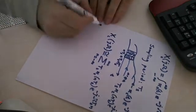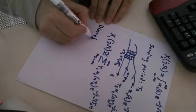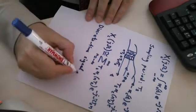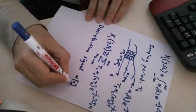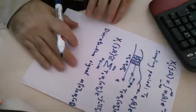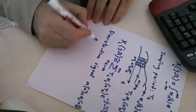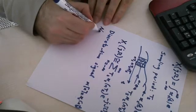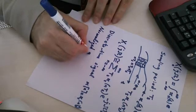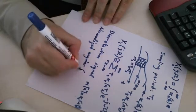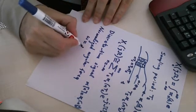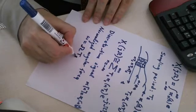Now, we define the discrete time signal xn as xc of nts, and we define the normalized frequency, normalized angular frequency, omega is capital omega times Ts.